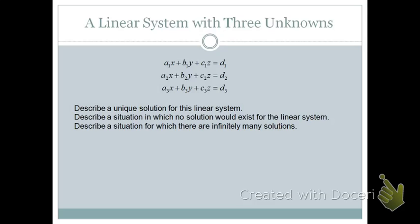Now, what I want to leave you to think about is what happens if I have a linear system with three unknowns. So say x, y, and z with constant terms d1, d2, and d3. What would a unique solution for this system actually look like? What would it look like if there were no solutions for this linear system? And what can we describe? How many situations could we have when we have infinitely many solutions? So think about this, and we'll discuss this in our next meeting.